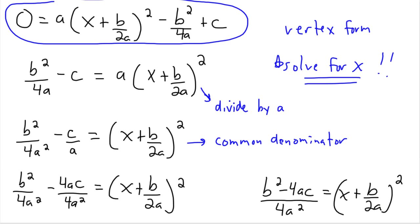We're not done yet but we're getting there. Do you notice there's a b squared minus 4ac? Hopefully you remember that one — it's a friend of yours. What we need to do now is go a little bit further: we need to take the square root of both sides.